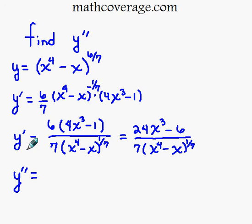Then I rewrite this to clean it up. Because this is negative 1/7, I take it to the bottom. Leave the 6 on top and bring the 7 down to the bottom. Then I distribute the 6 across. So 6 times 4x^3 is 24x^3, and 6 times negative 1 is negative 6.